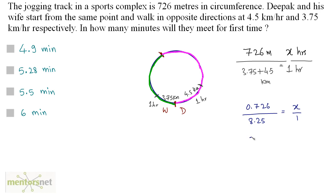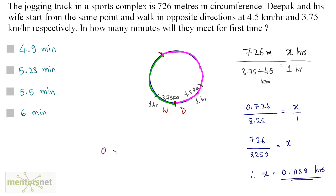So x equals 726 divided by 8.25, which gives 0.088 hours. To convert to minutes, multiply by 60, since 1 hour equals 60 minutes, and that comes out as 5.28 minutes. So the answer is option B.